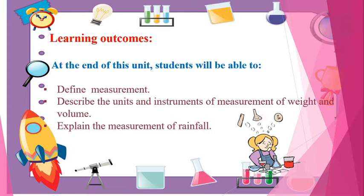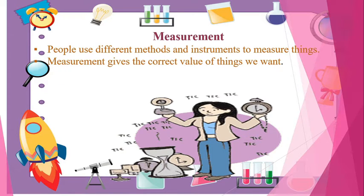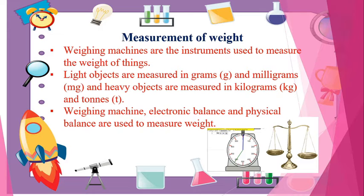Students will also be able to explain the measurement of rainfall. Measurement: people use different methods and instruments to measure things. Measurement gives the correct value of things we want. Measurement of weight: weighing machines are the instruments used to measure the weight of things.